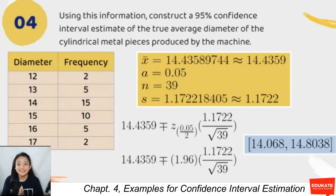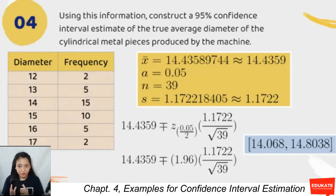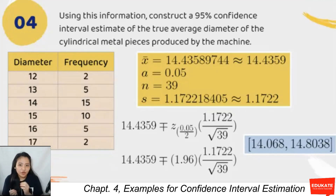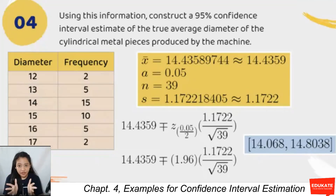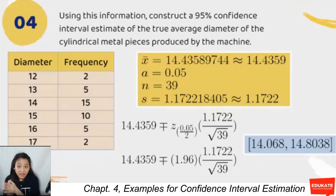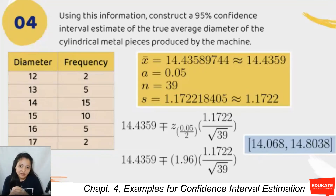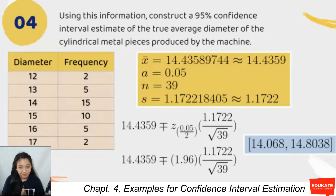Substituting into the CI: 14.4359 ± z sub 0.025 × (1.1722 / √39). The z-table gives a tabular value of 1.96. Computing the lower extreme as 14.4359 minus and the upper extreme as 14.4359 plus yields the final answer: 14.068 < μ < 14.8038.